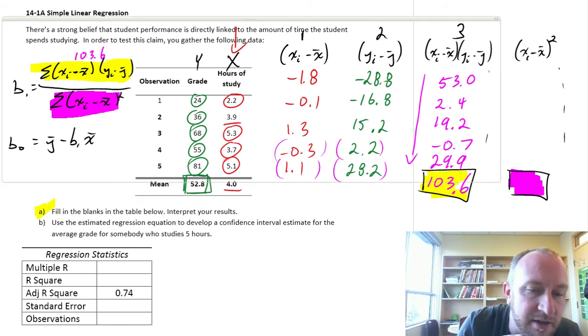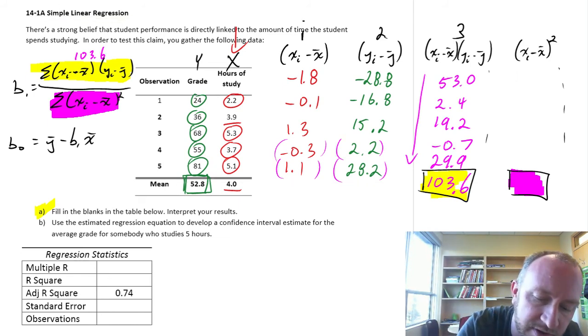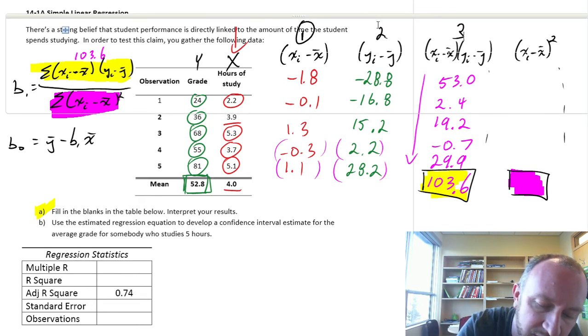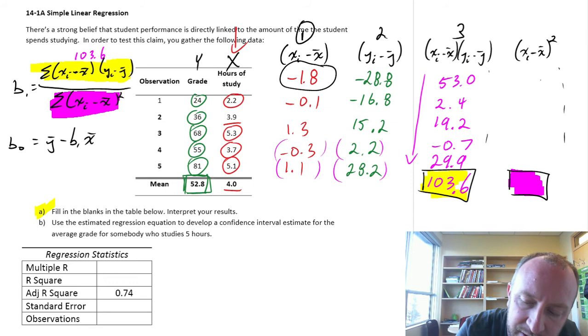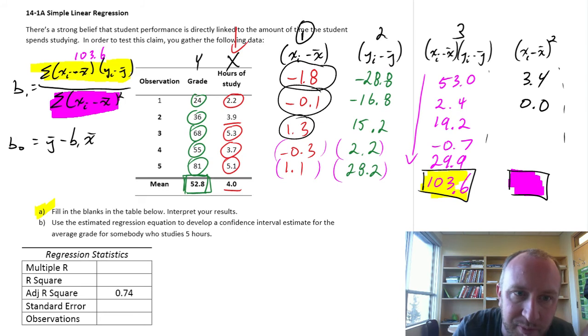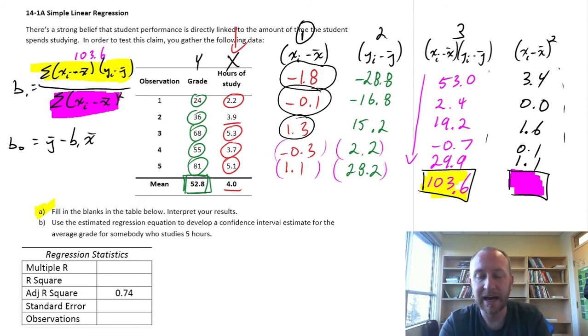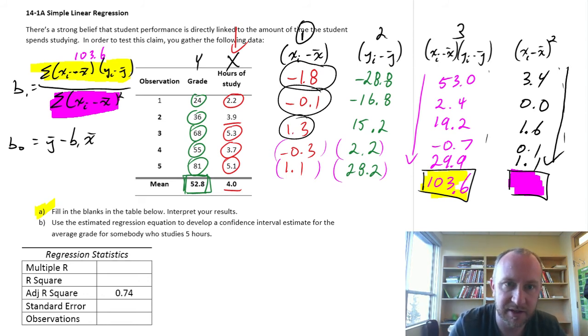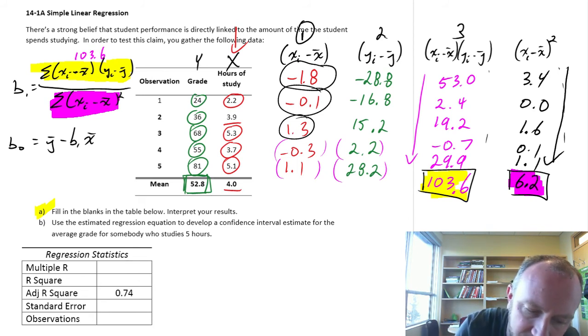So this is 103.6. Now, for the denominator, we need to calculate this first column, and then we're going to square it. So we're starting here. 1.8 squared, this will give us 3.4. Negative 0.1 here, if we keep this to one decimal place, this will just be 0. A little bit of rounding error there. 1.3, this will give us 1.6. Negative 0.3, this will give us 0.1. And 1.1, this will just give us 1.1 again. And now, we add up down this column here, and I have 6.2. So there's my denominator, 6.2.